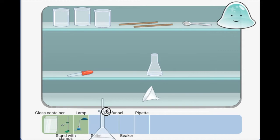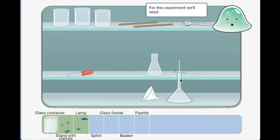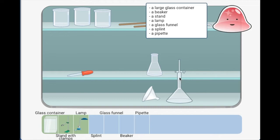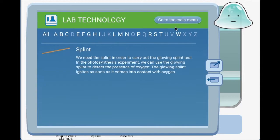So we can check the confusion. We will take it out. For this experiment we will need a large glass container. We will take a glass funnel and then we will take a splint. This splint - you can get some information about the splint.